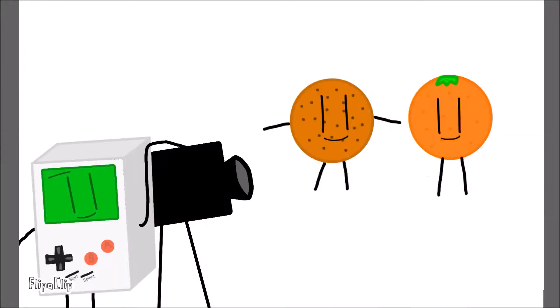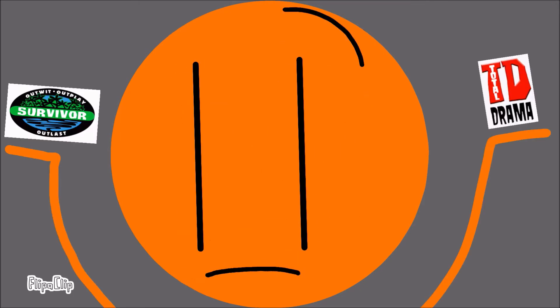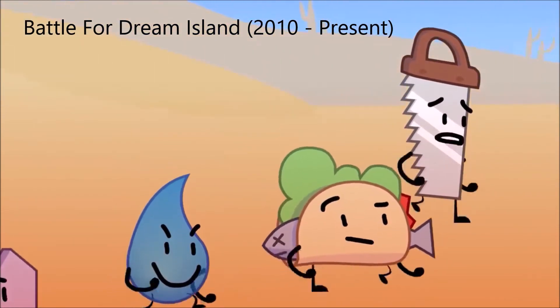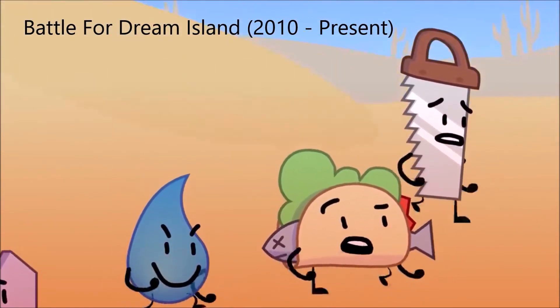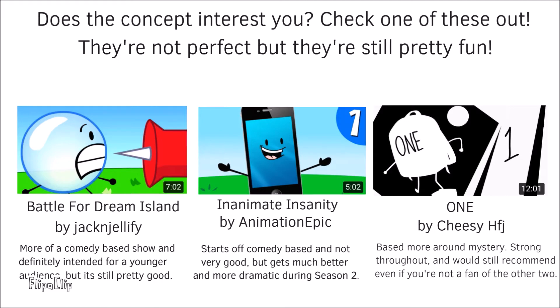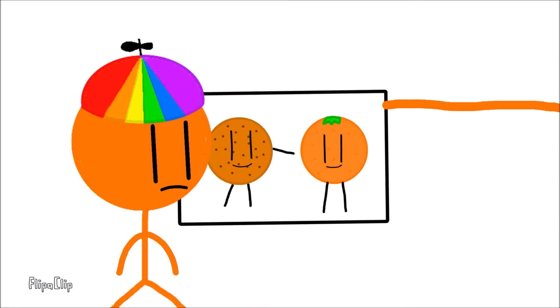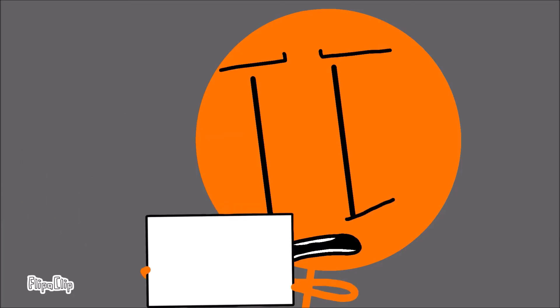In the briefest way I could possibly explain it, object shows are generally just competition reality shows between a group of contestants, like Survivor or Total Drama Island, except all of the contestants are just anthropomorphic animated objects. In most cases there's an element of viewer interactivity in which you can vote off one of the contestants every episode. You can find a bunch of these all over YouTube and I still watch some of the better ones pretty regularly to this day.